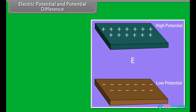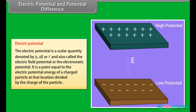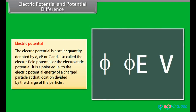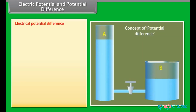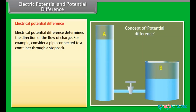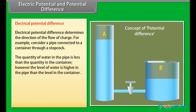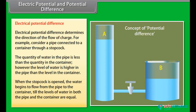Let us look at the concepts of electric potential and potential difference. Electric potential is a scalar quantity denoted by E or V, equal to the electric potential energy of a charged particle at the location divided by the charge of the particle. Electrical potential difference determines the direction of the flow of charge. Consider a pipe connected to a container through a stop cock — the water level is higher in the pipe than in the container. When the stop cock is opened, water flows from the pipe to the container until the levels are equal. It is the potential difference that is responsible for the direction of flow.